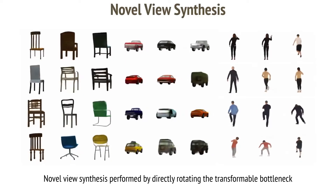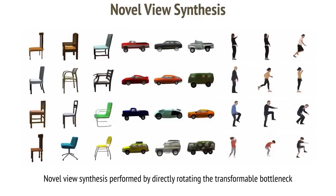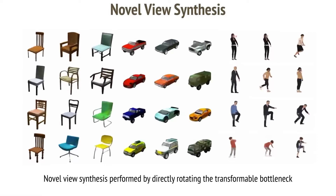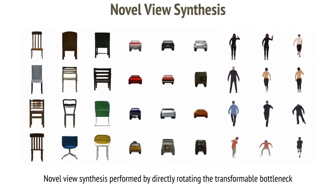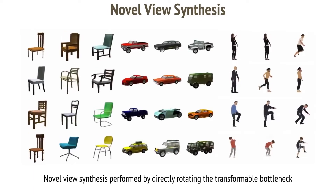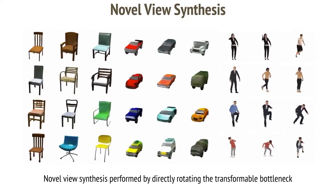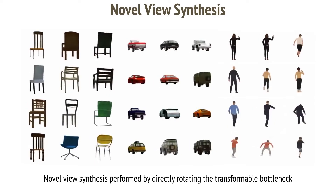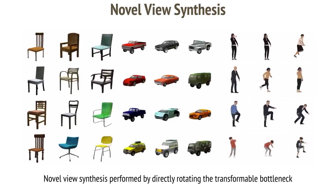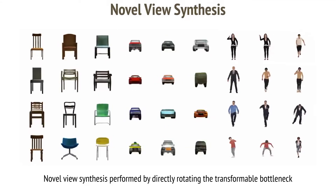Here we present samples of novel view synthesis results on a variety of object categories. Using four images per object, we compute a single 3D bottleneck that can be rigidly transformed to generate consistent novel views from a variety of azimuths and elevations. We demonstrate this on objects with challenging structures such as chairs, challenging appearances including varied textures and transparent glass regions such as cars, and non-rigid structures such as human bodies. Our approach achieves state-of-the-art results on novel view synthesis and 3D reconstruction benchmarks.